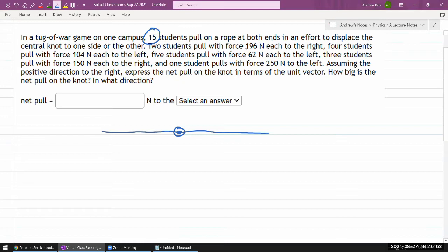Two students pull with force 196 newton each to the right. Okay, let me just indicate that. So one pulling to the right, another pulling to the right. And both of them are 196 newton each.